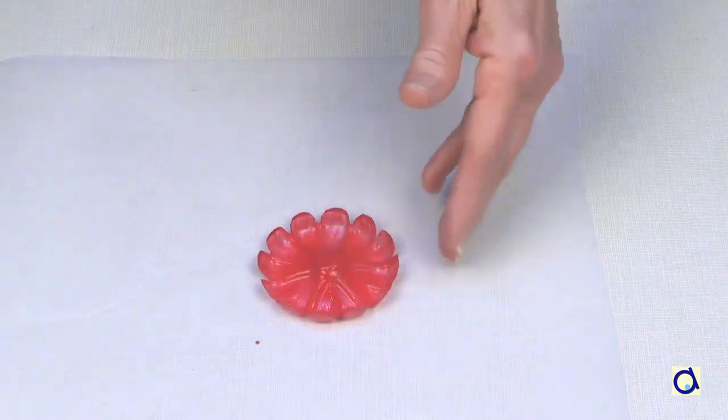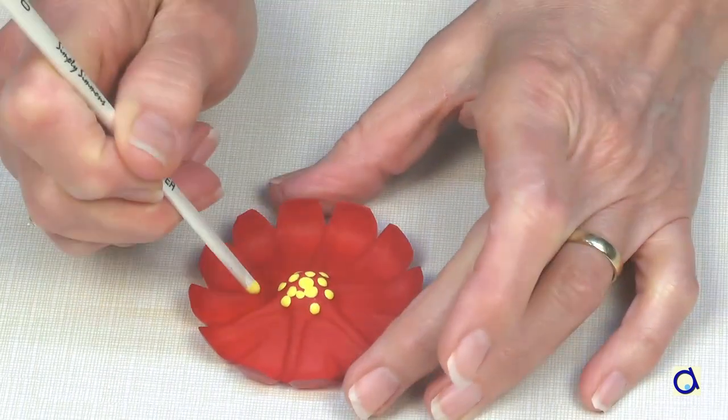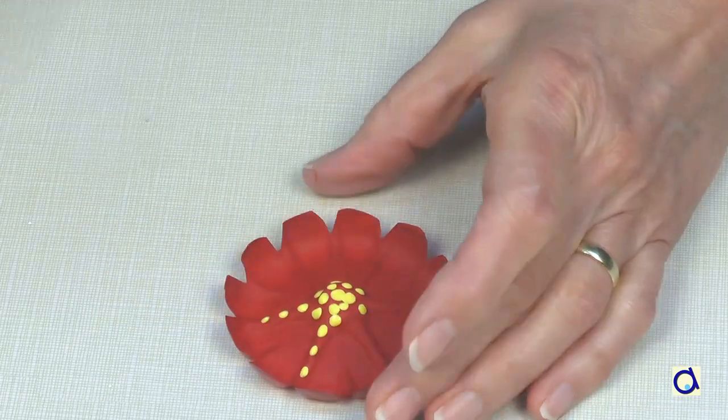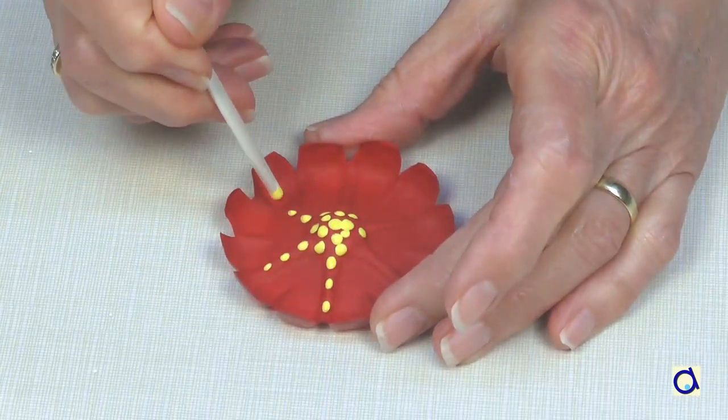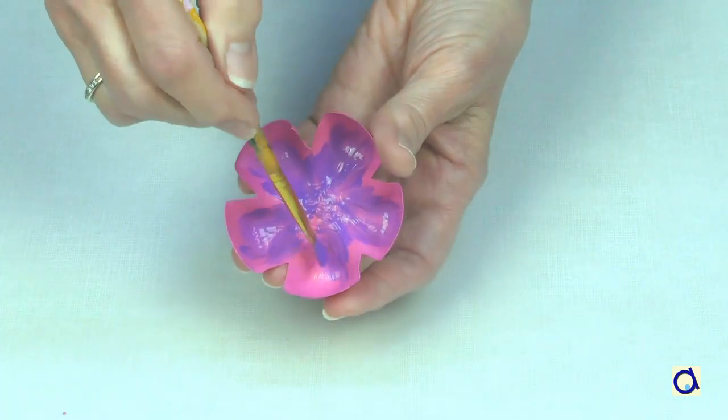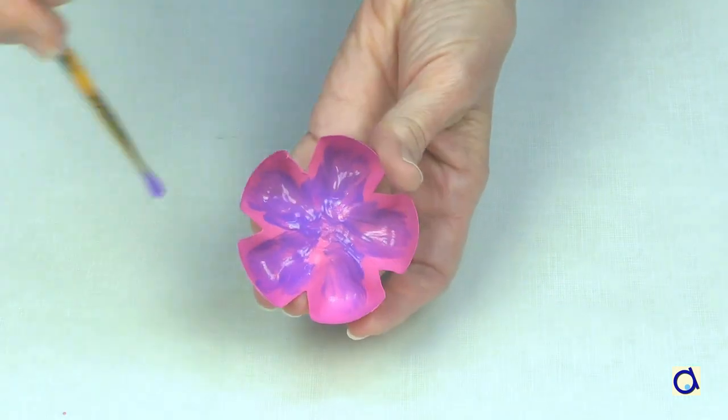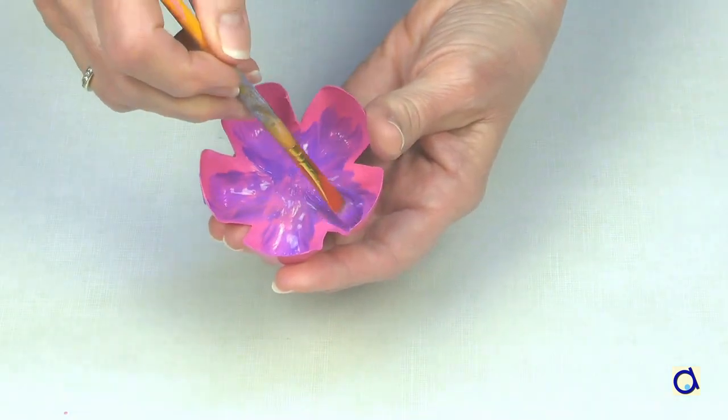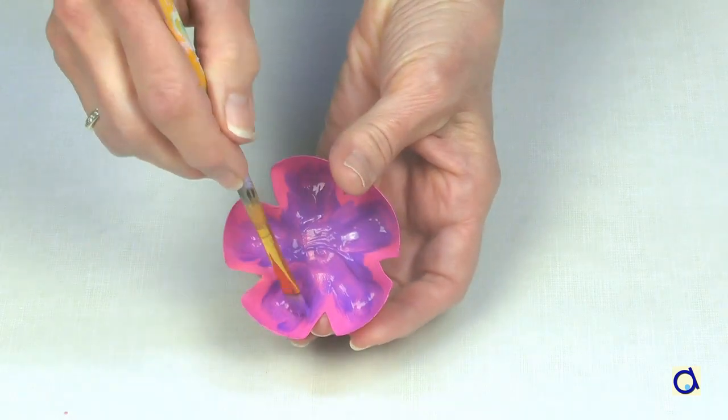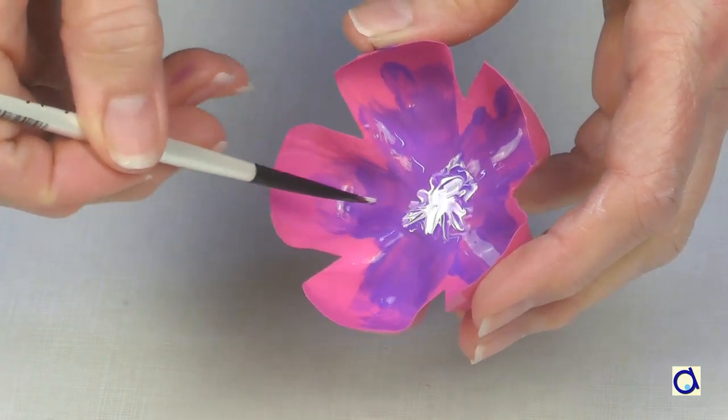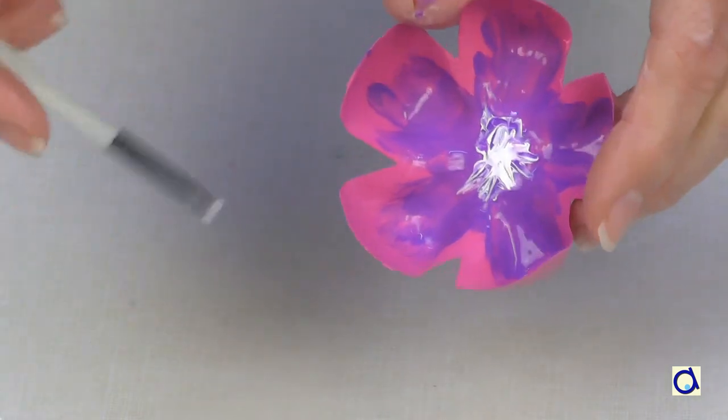I used two different techniques to decorate the flowers. For this first model, I took the back of a paintbrush and I made yellow dots in the center of the flower and also between the petals. In this other model, I did not wait for my second base coat to dry before mixing another color to the first and finally I added a little bit of white paint in the center. The result is two completely different flowers. So don't hesitate to use your creativity to make your flowers unique.